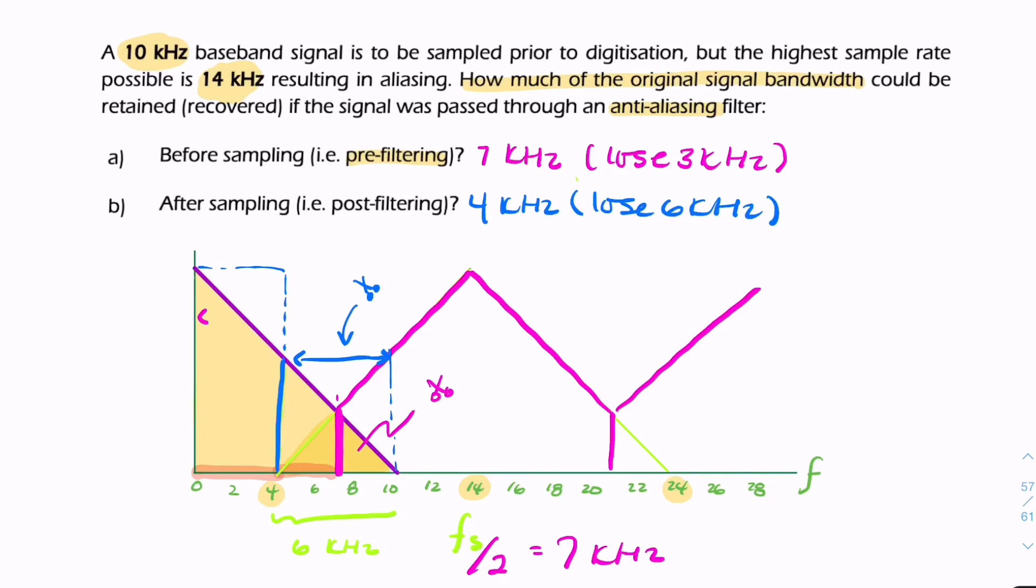Given these two scenarios, which one would be more effective? Assuming we had the choice, we would want to pre-filter. We don't always have the choice, but if we do, we should be filtering before sampling rather than after. That's your final answer.